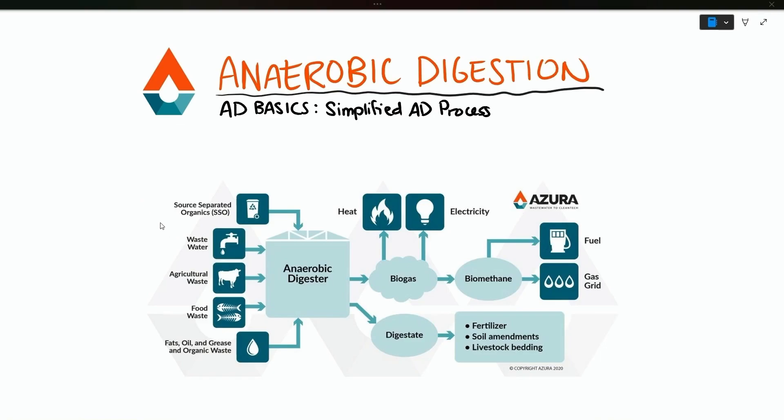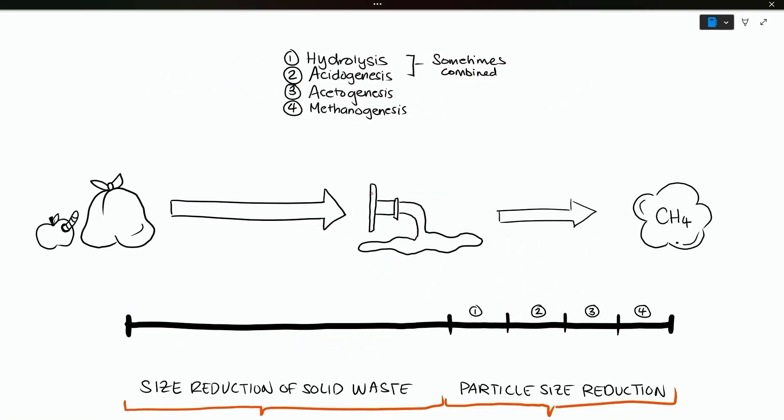In most schools, anaerobic digestion is taught with a biochemical lens. But when you Google anaerobic digestion, you'll usually get something like this where you have waste going into a digester and then you get products coming out, or you'll get something academic that focuses on the three or four step chemical pathway that produces methane.